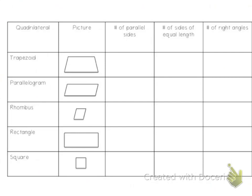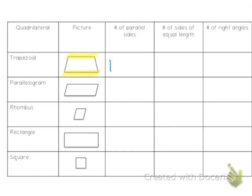The first one is a trapezoid. When we look at this trapezoid, we can see that the top line and the bottom line are parallel, but the right and the left are not. If I were to continue these lines, they would eventually intersect. So a trapezoid has one pair of parallel sides.